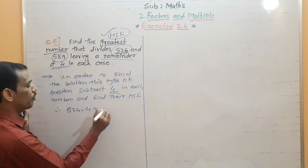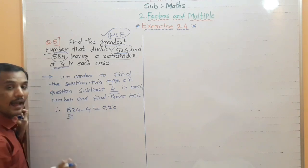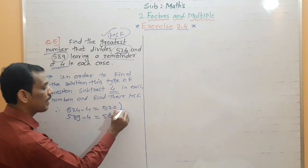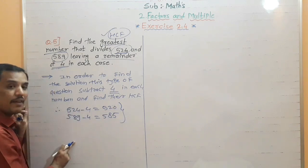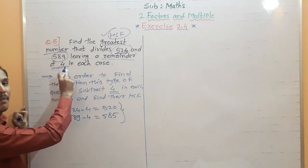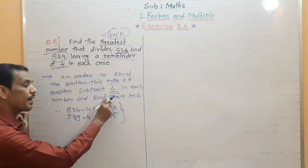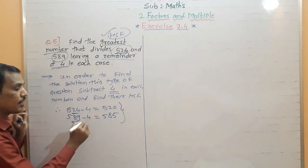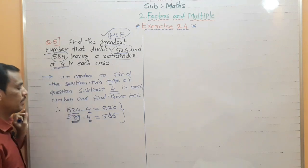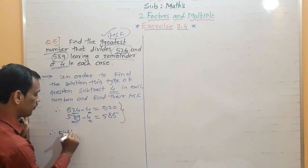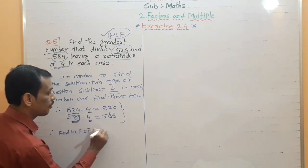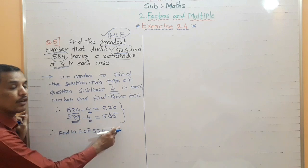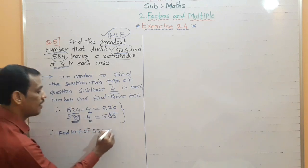Therefore: 524 minus 4 equals 520, and the second number: 589 minus 4 equals 585. We subtracted 4 because at the end we want 4 as the remainder. So if these numbers are exactly divided by the HCF, dividing the original numbers will give a remainder of 4 in each case. Therefore, we now need to find the HCF of 520 and 585.